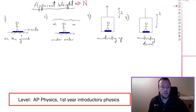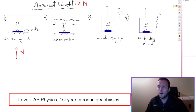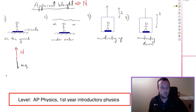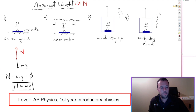Let's take the easiest situation: just a person standing on the ground. If you do a free body diagram on that person, there's a normal force and there's also a weight, which is the mass of the guy times little g. If this guy is not accelerating, that's a very simple problem to solve. The normal minus the weight has to equal zero, so we get the simple answer that the normal force, or the apparent weight, equals the weight. That's case number one.